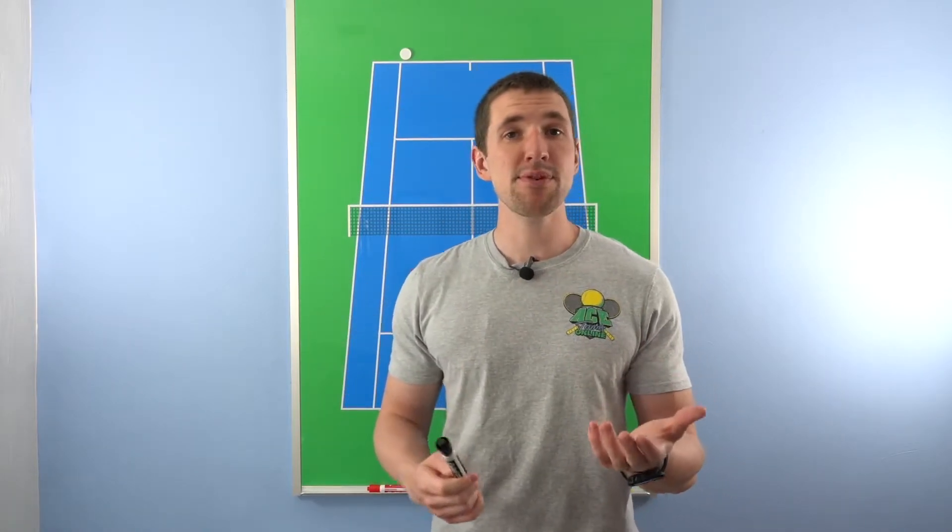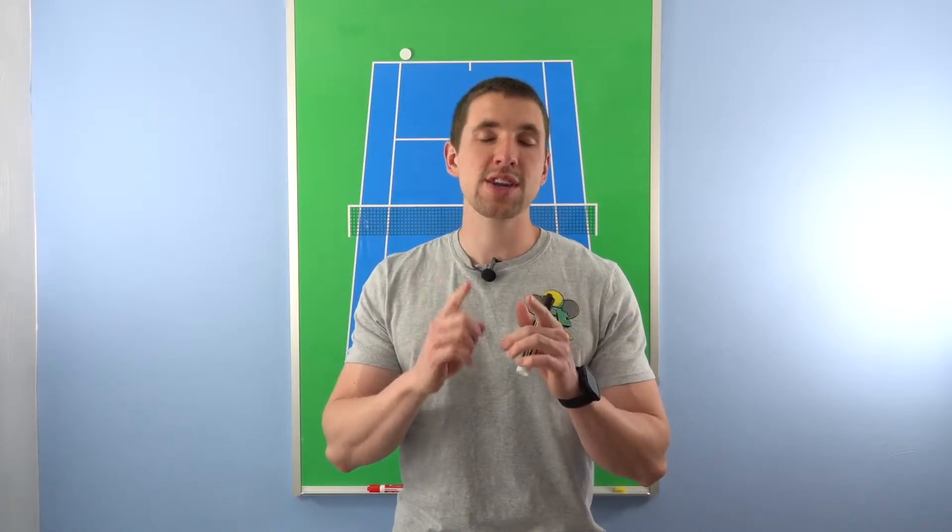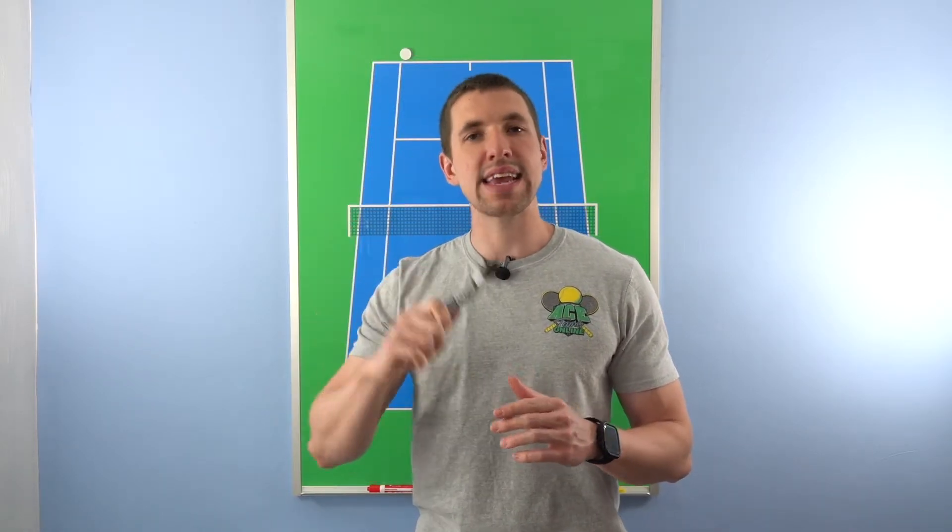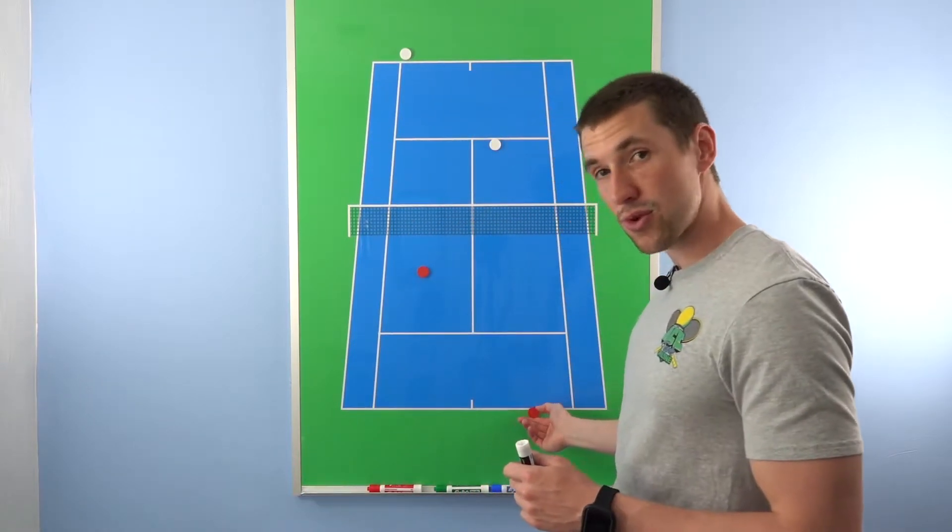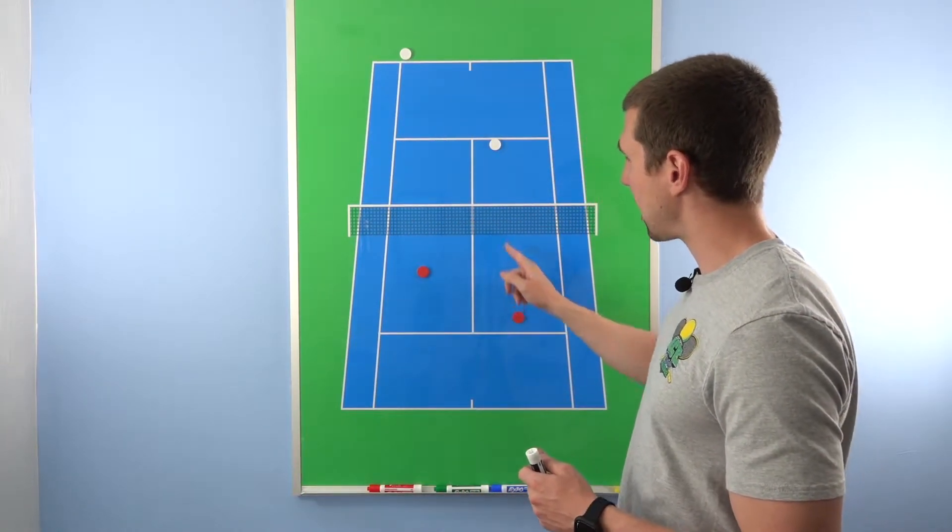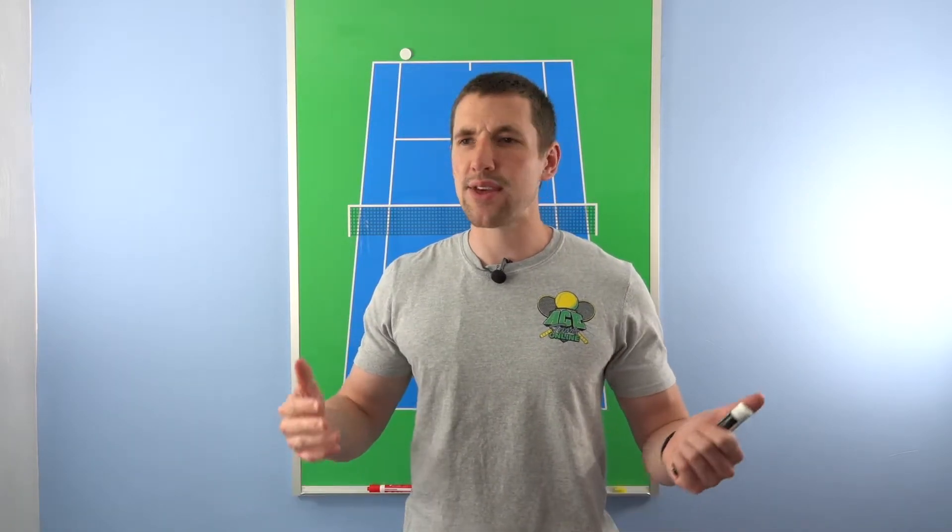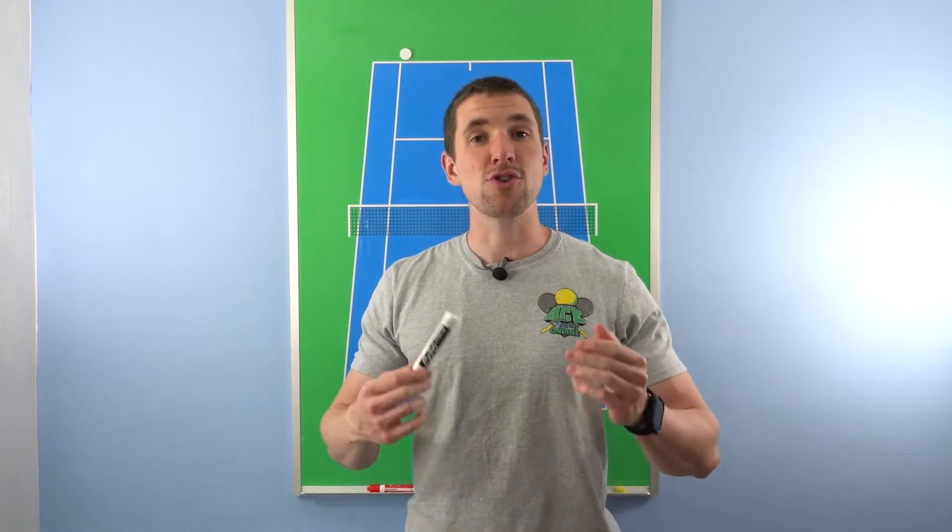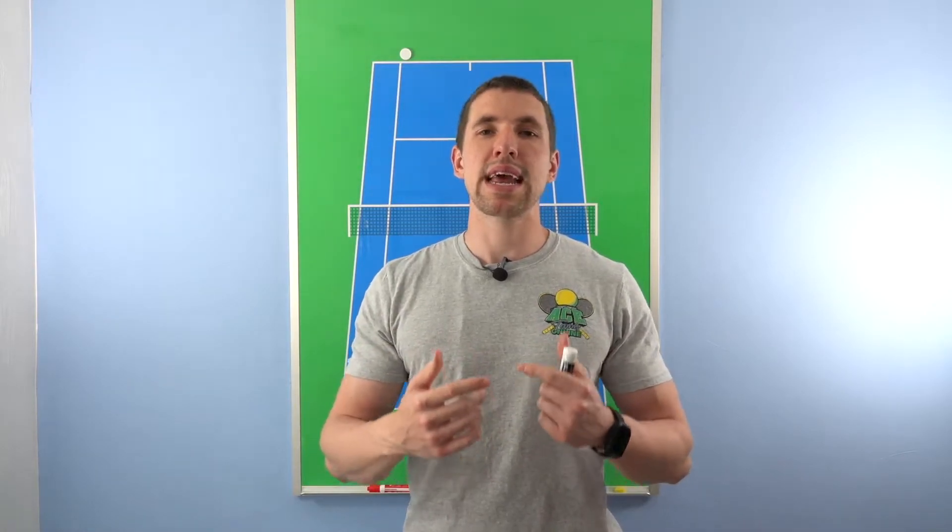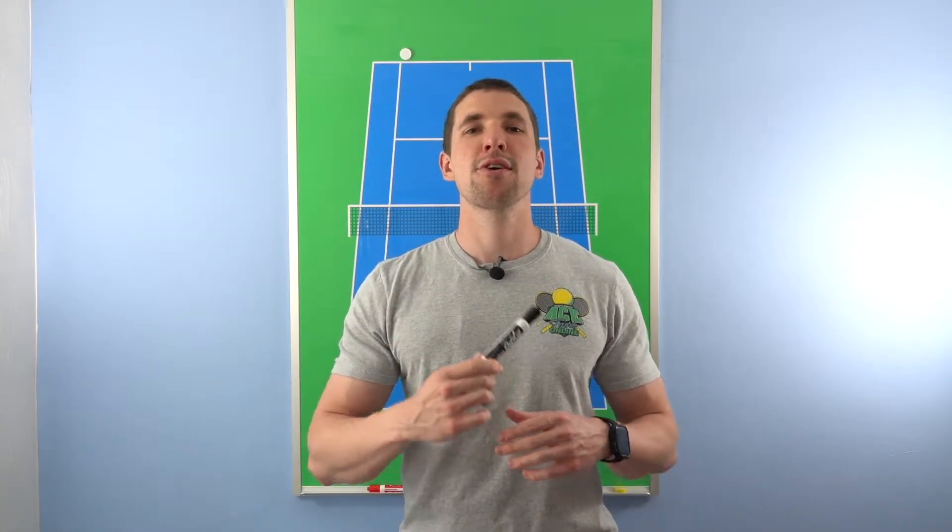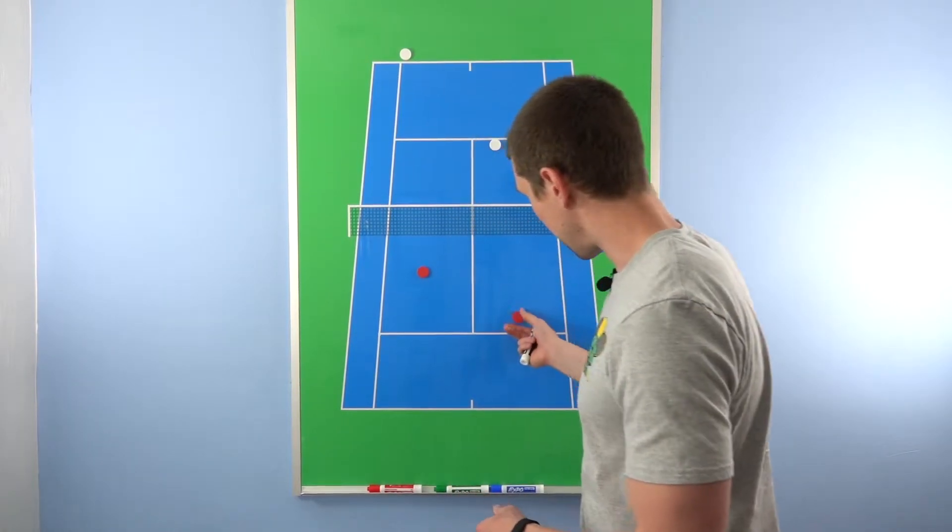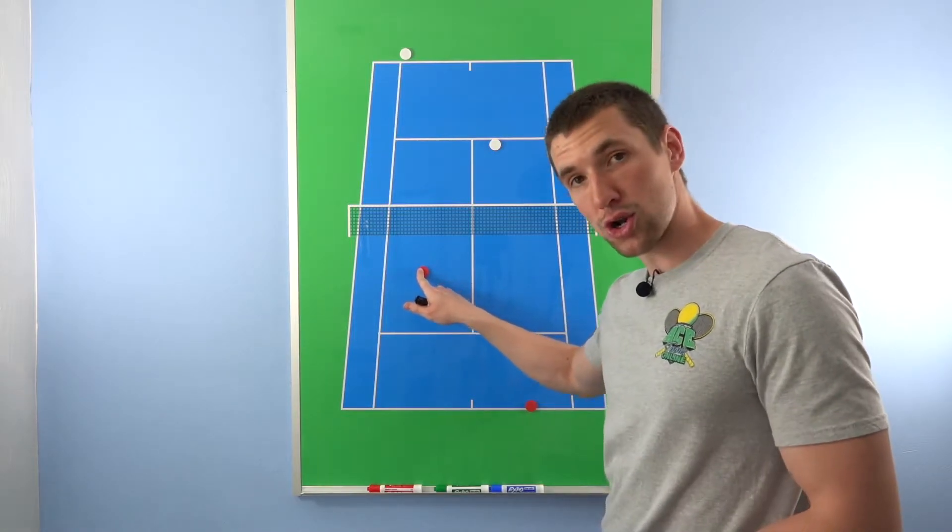So, 80% of the time, maybe even 90% of the time, you're going to be right if your instinct is, let me keep the point going. Now, obviously, let's say if you have a short ball and you have a big target open down the line, you're able to be aggressive, and you think you're going to win the point with that shot, those are exceptions. But if you want to be right a majority of the time, baseliner prolongs the point and tries to set up their net player. So, keep the point going, look to end it.